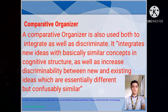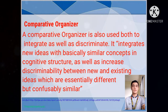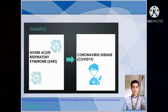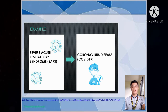Comparative organizers are used both to integrate and to discriminate. They integrate new ideas with conceptually similar concepts in cognitive structure, as well as increase discriminability between new and existing ideas that are essentially different but confusingly similar. This organizer is used when you are already familiar with the topic or when new information can be integrated with prior knowledge. For example, if you have knowledge about SARS and there is new information about COVID-19, you can compare and contrast them to understand their similarities and differences.